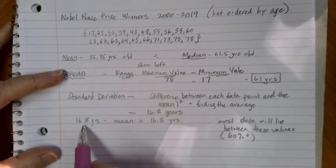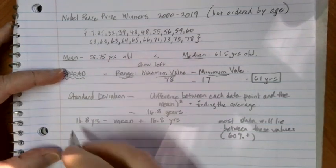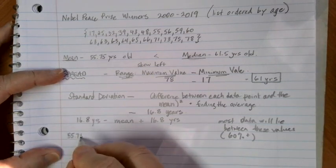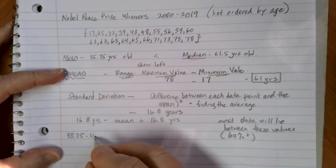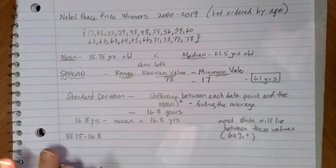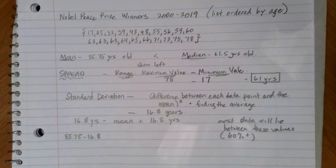On the younger side, if we're looking at this spread of data, our mean was 55.75 years old. If we subtract 16.8 years old, we would get a lower end of kind of this inside grouping in terms of what we're looking for here. So if we take 55.75 and subtract that, minus 16.8, we get 38.95.